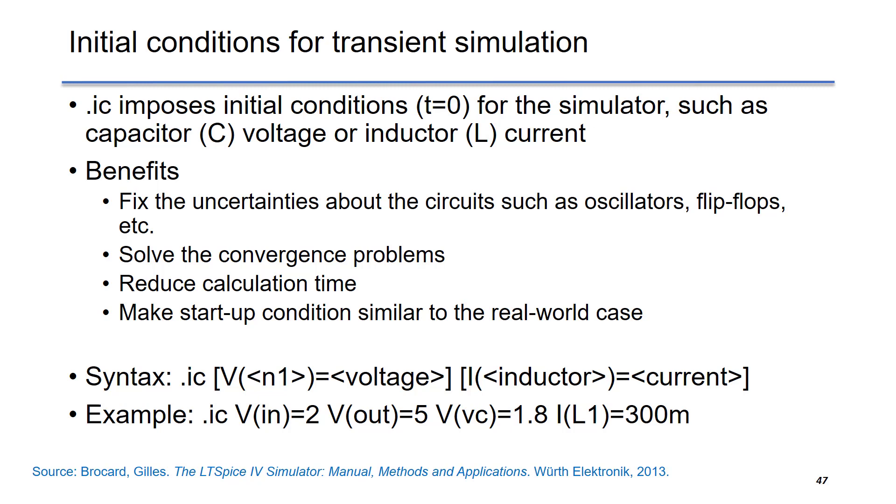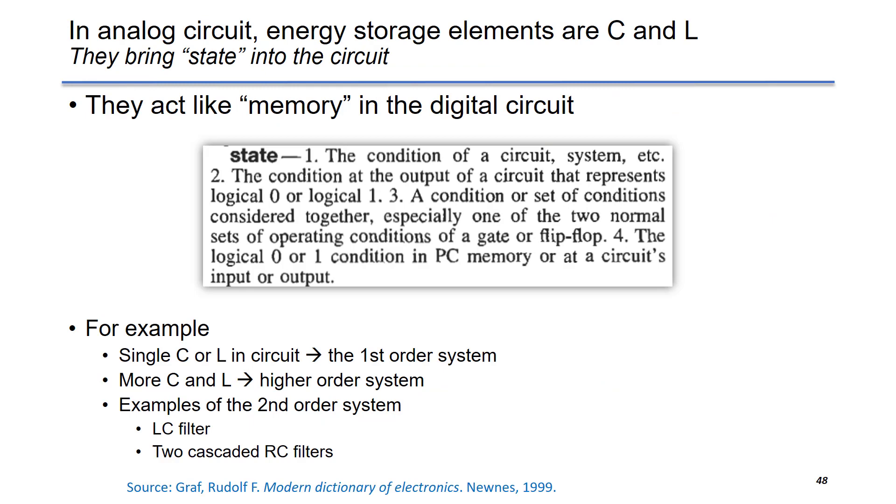The syntax is dot IC followed by the voltage of a node and the current of an inductor. In this example, it shows the initial voltage at label net in, out, VC, 2V, 5V, and 1.8V, respectively. The initial current at inductor L1 is 300 mA.